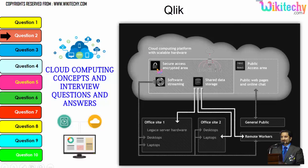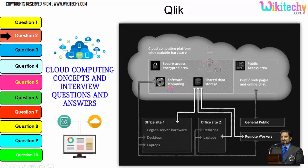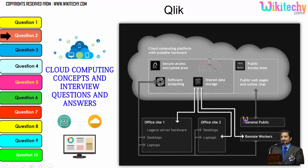Cloud computing will have a public access area with public web pages for end users. Apart from this, there is secure data access, shared data storage, and software streaming. Companies can use it as a private kind of setup and the public can also use it to access web pages or websites. That's how cloud computing works.